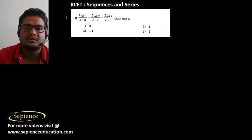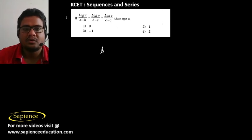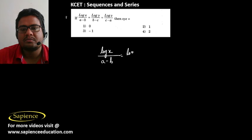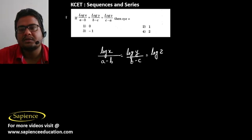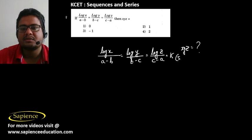In the first question, it is given that log x by (a minus b) equals log y by (b minus c) equals log z by (c minus a). We have to find the value of x·y·z. Let this be equal to some constant k. Therefore, log x will be equal to k times (a minus b).